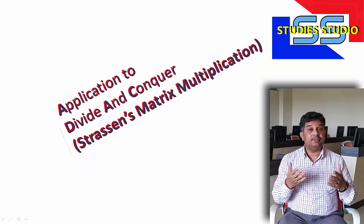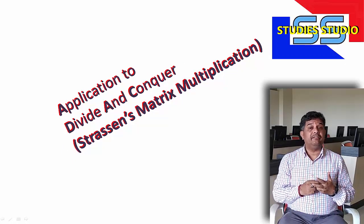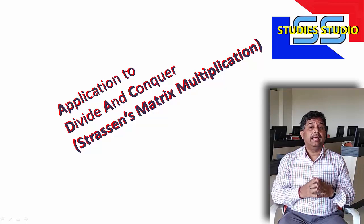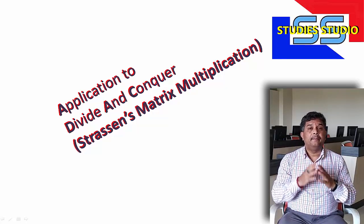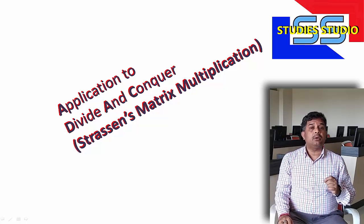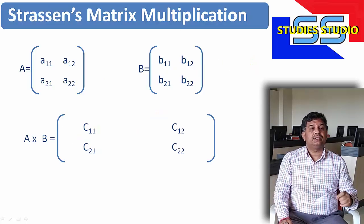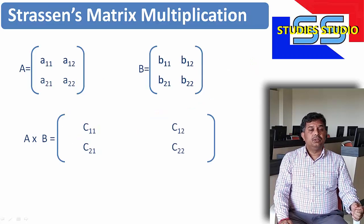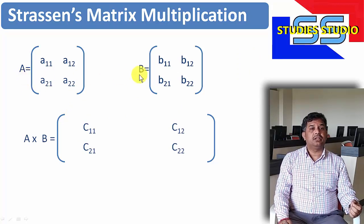In our previous videos, we have seen what is divide and conquer and how to apply divide and conquer in order to solve any problem. We have discussed quicksort, merge sort, and binary search. In this video, we are going to learn how to apply divide and conquer in order to solve Strassen's matrix multiplication. So, in general, how we solve any matrix multiplication?